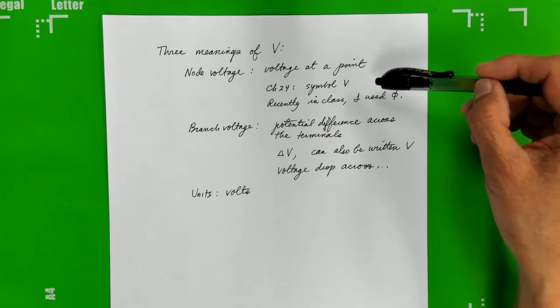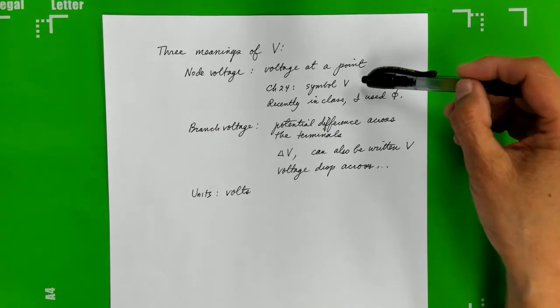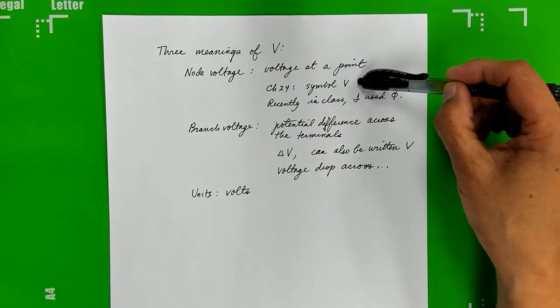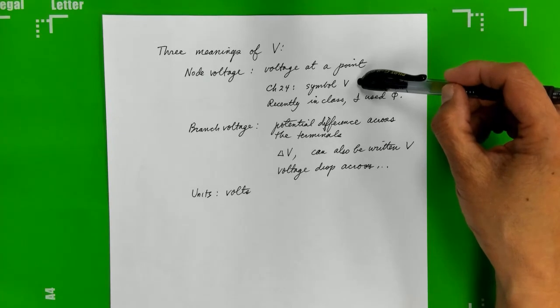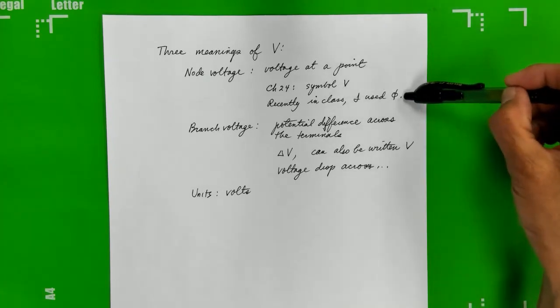In chapter 24 of your textbook, the symbol for voltage at a point is V. But recently in class, to distinguish it from other meanings of V, I used the symbol phi.